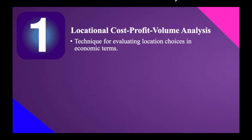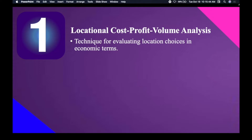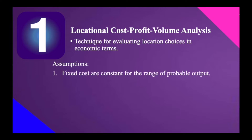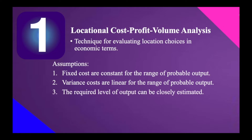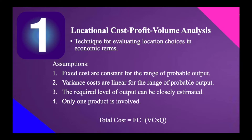For the first one, locational cost-profit volume analysis, this is basically a technique for evaluating location choices in economic terms. The assumptions are: first, fixed costs are constant for the range of probable output; second, variable costs are linear for the range of probable output; third, the required level of output can be closely estimated; and lastly, only one product is involved. The formula for total cost is FC plus VC times quantity, where FC is fixed cost and VC is variable cost.